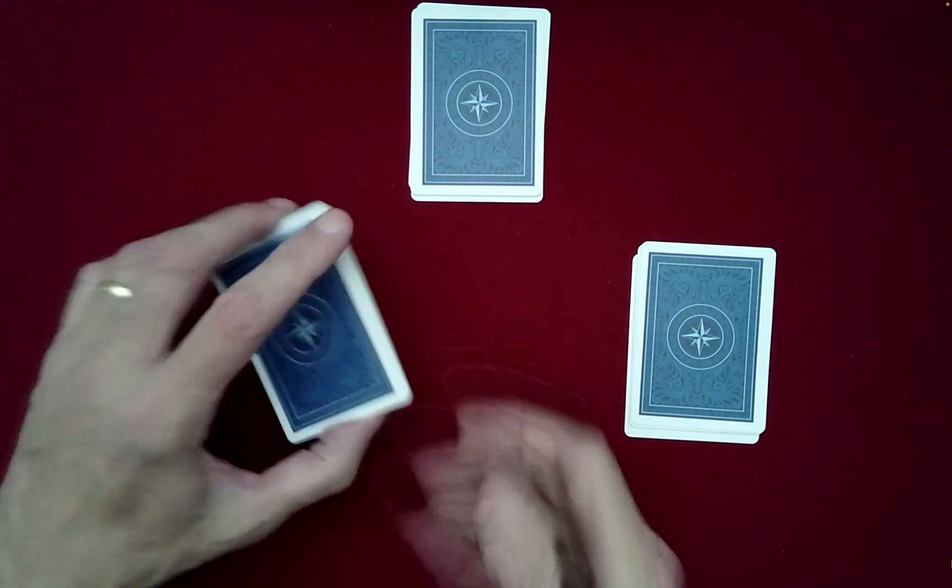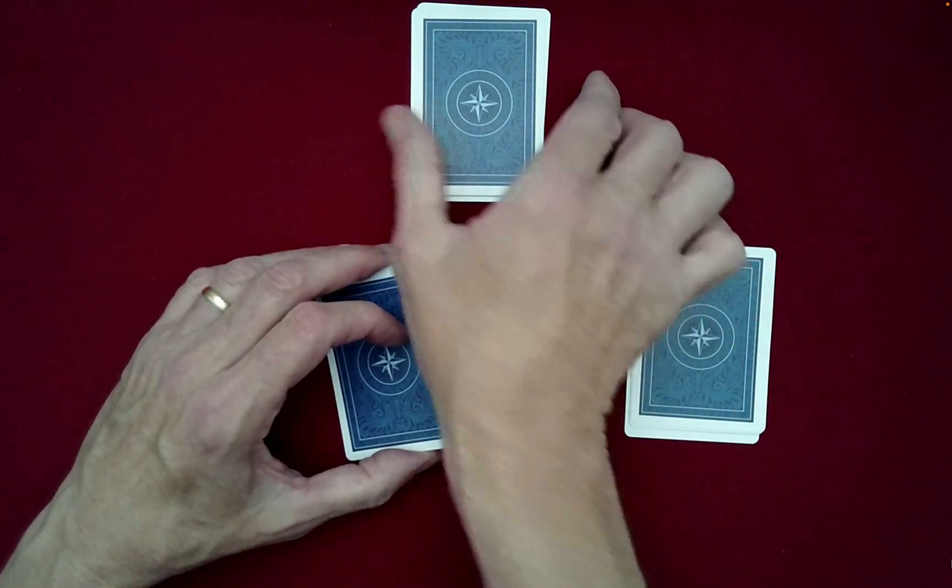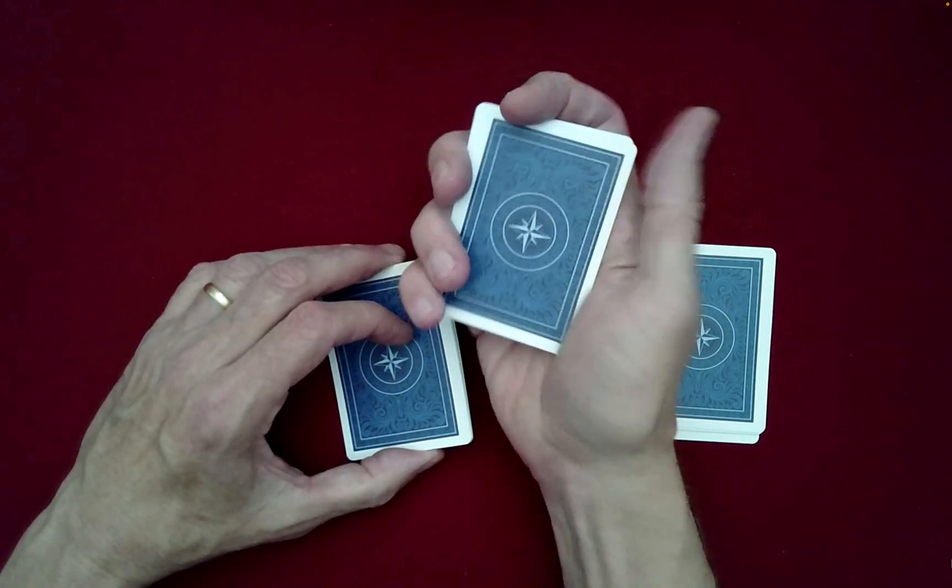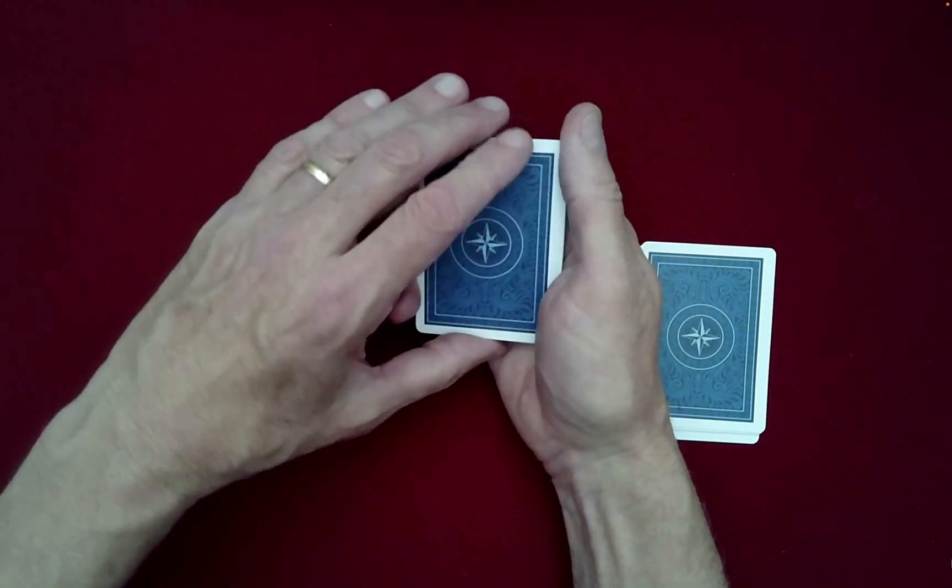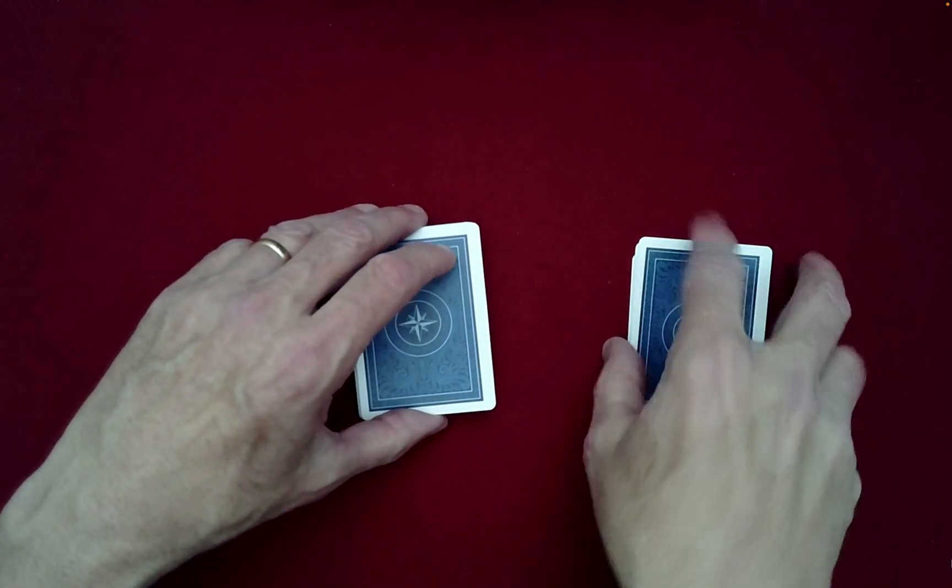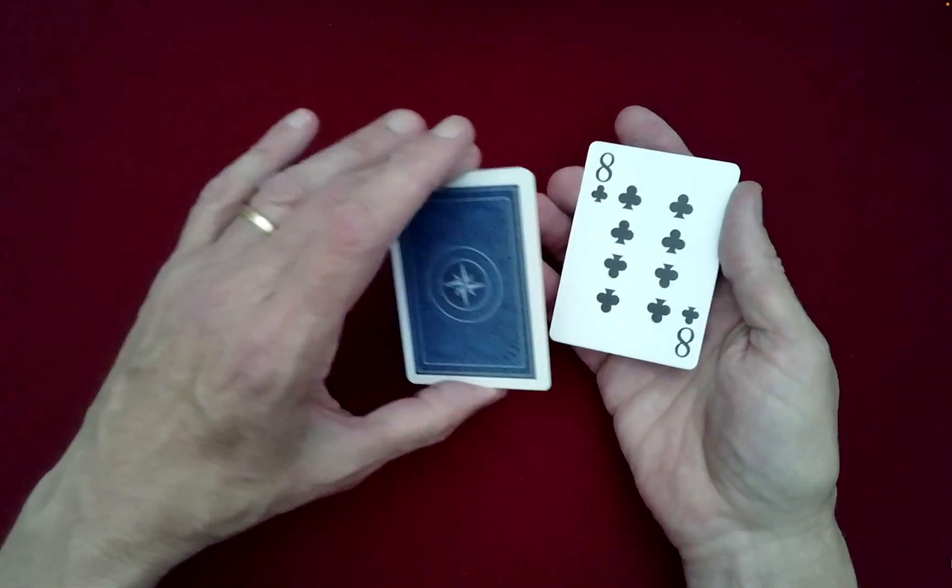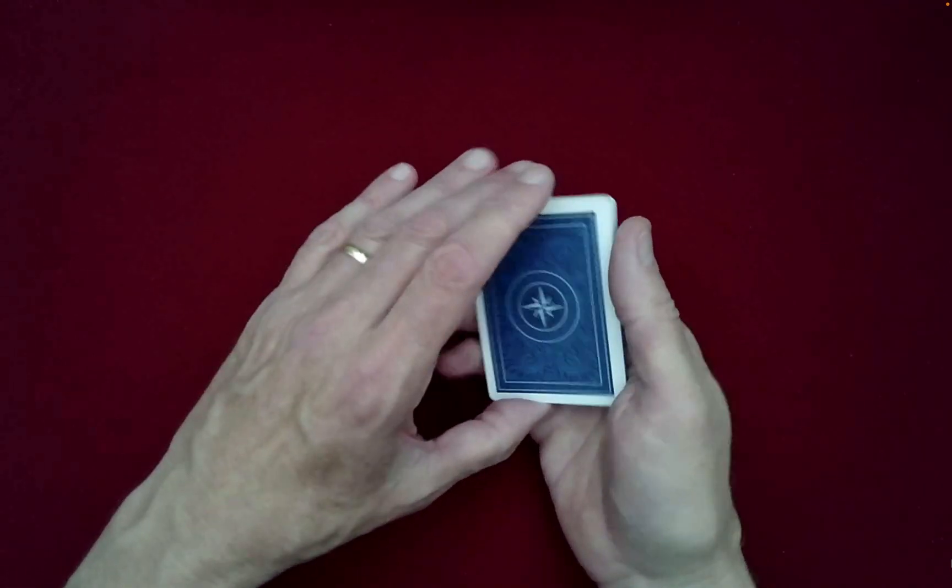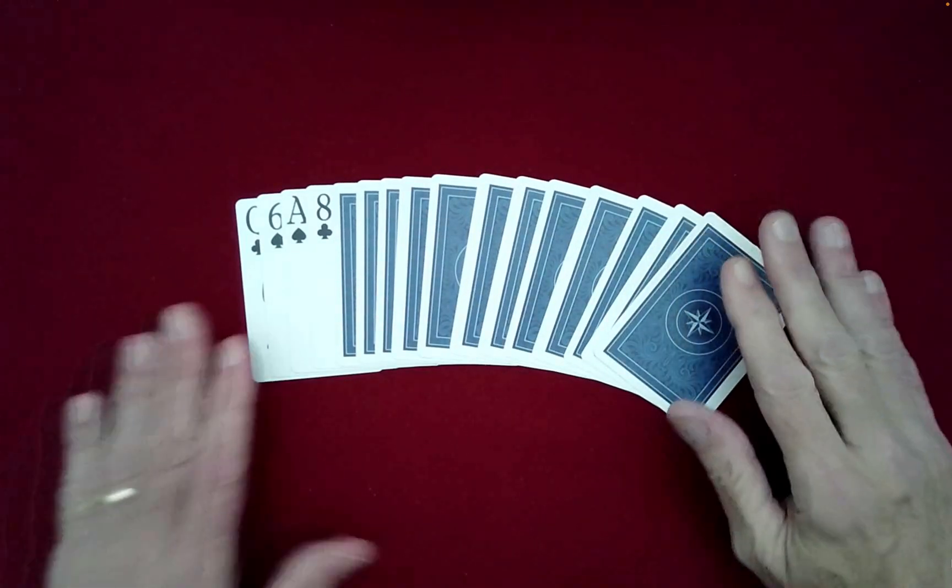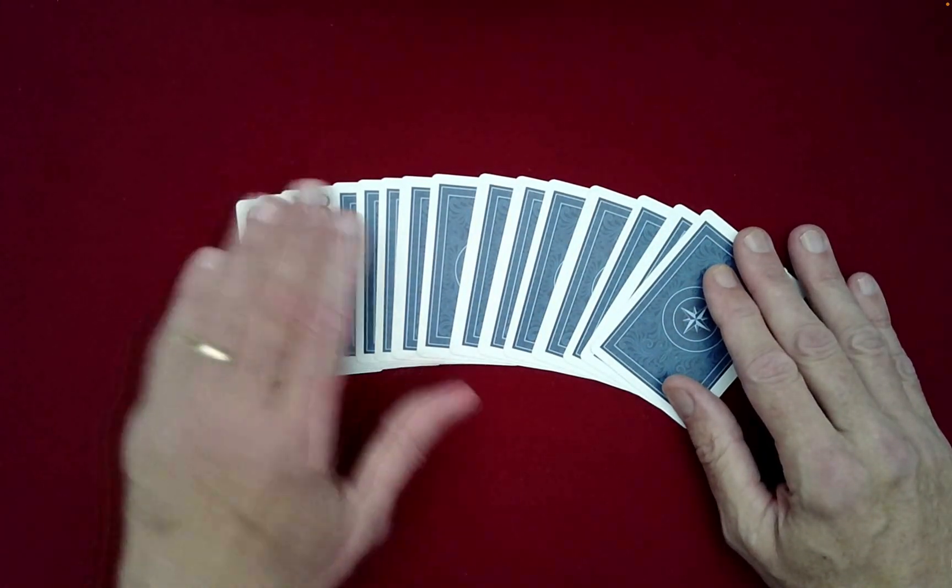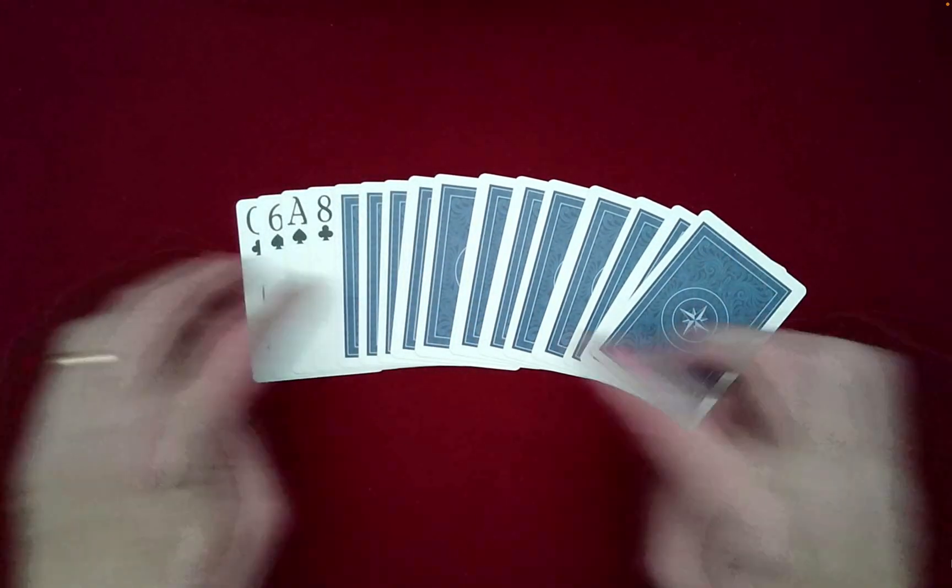Okay so what you do is you take their cards, the spectator's cards, you put them at the bottom of the remaining eight. You take your cards and it doesn't matter if they see these, and you place them face up at the bottom. Okay so that's the situation right now: my four cards, their four cards, and then eight cards above.